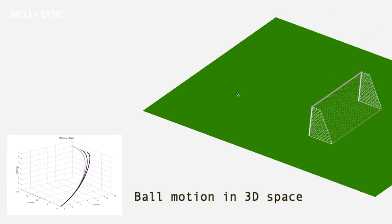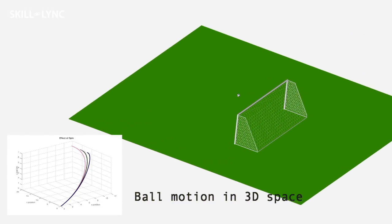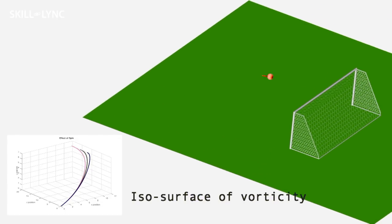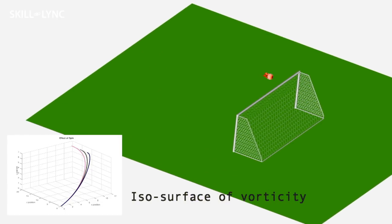To take it one step further, we also did a CFD simulation, and here are the results. Along with the ball motion, we are displaying the isosurface of vorticity. Vorticity gives us information about localized fluid rotations.